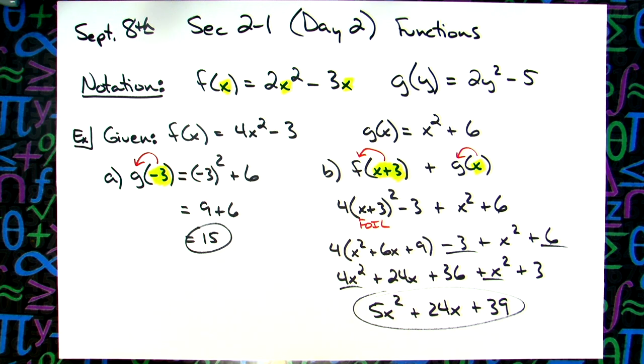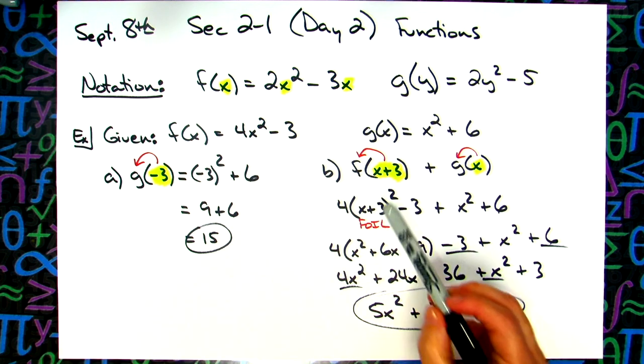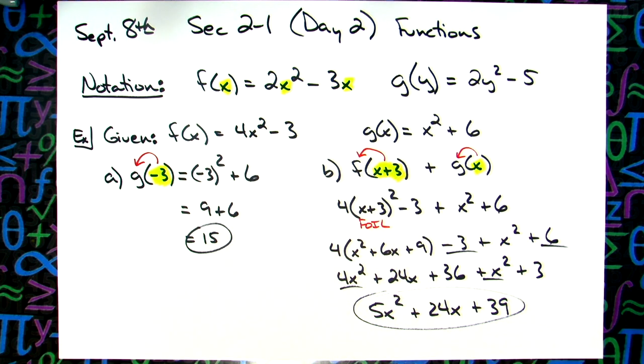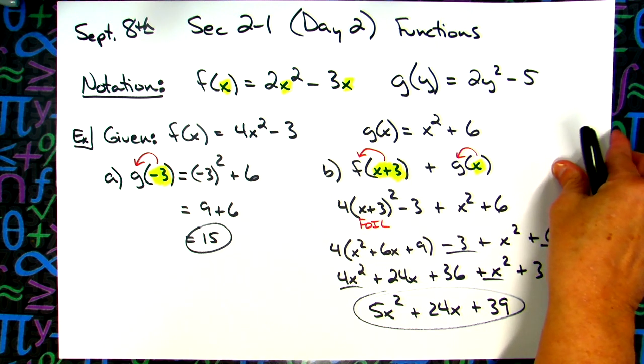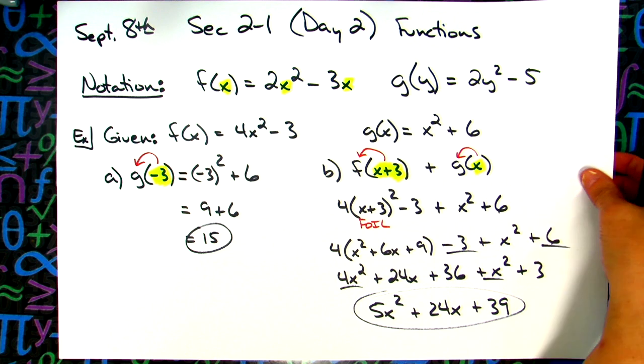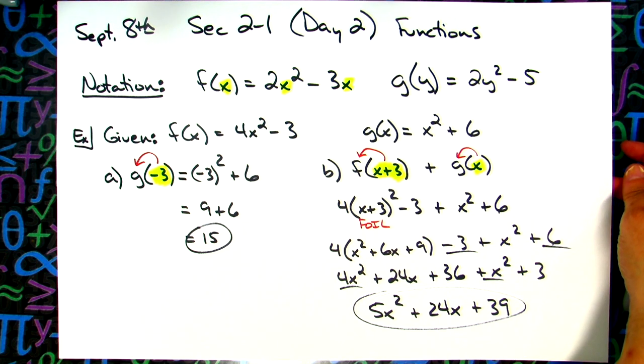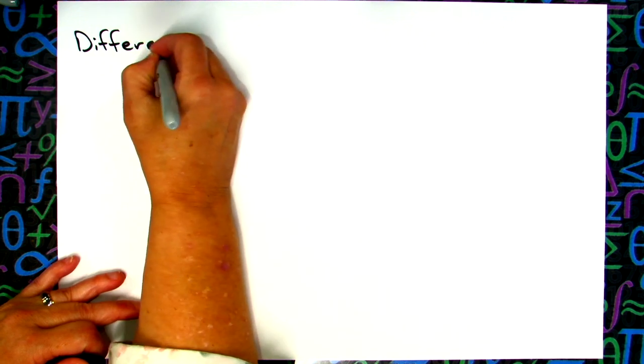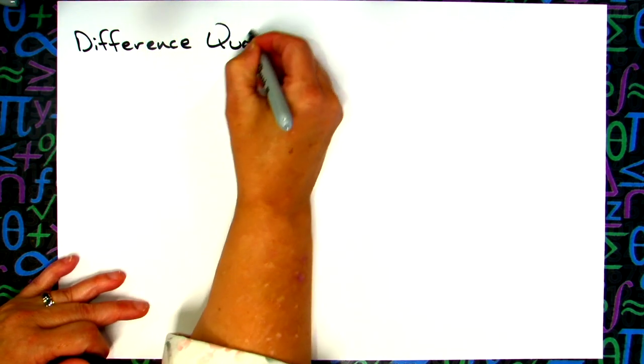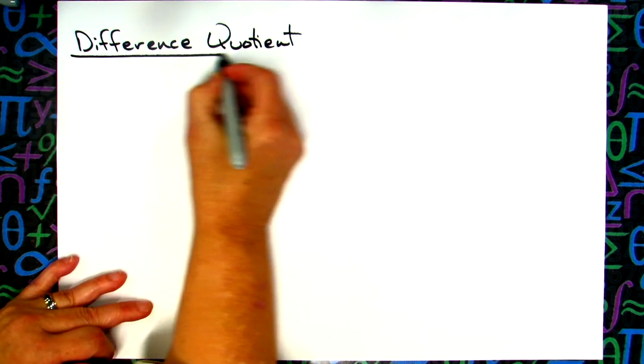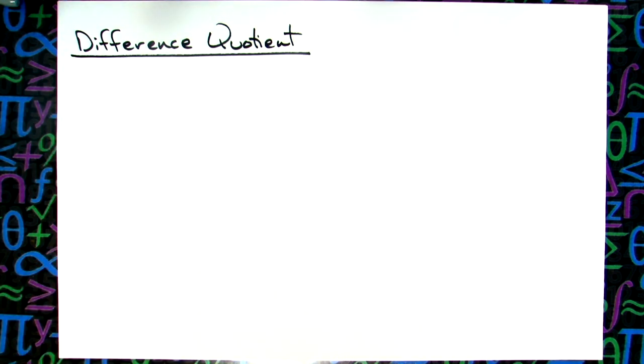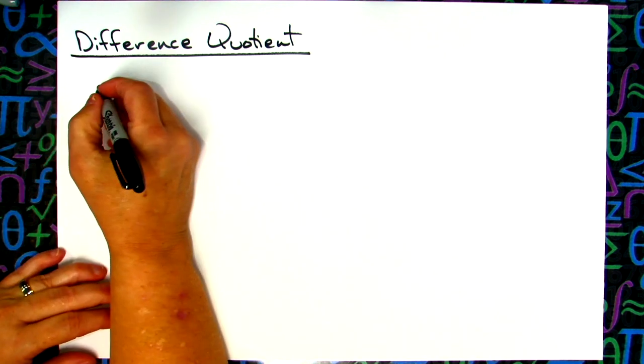Now, the reason that this is together with the difference quotient is because you have to understand what function notation is to be able to do the difference quotient. The difference quotient lays the foundation for almost everything we do in calculus. We're not going to be doing any calculus. All we're going to do is evaluate this thing called the difference quotient. It is something you have to have memorized.